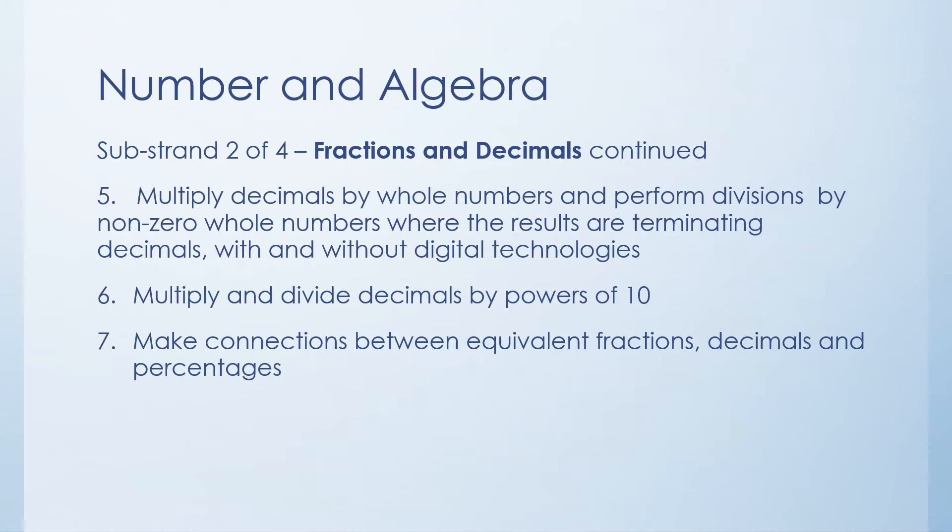There's more fractions and decimals content descriptors. The fifth one is multiplying decimals by whole numbers and also performing division of non-zero whole numbers where the results are terminating decimals with and without calculator. So terminating decimals just mean the decimal ends. It's not continuously the same number unless that number at the end is zero. So as an example, ten divided by four will be 2.5 and that will be 2.5 and then it will only be zeros after that. So that's an example of a terminating decimal.